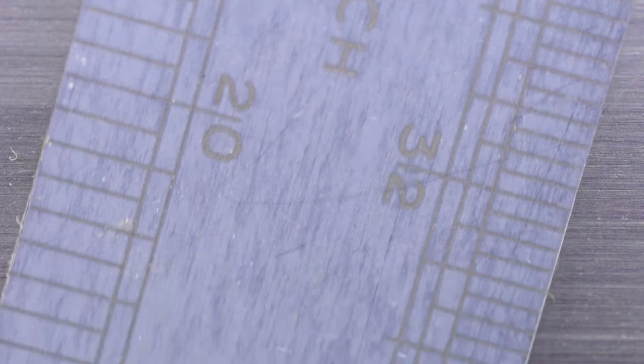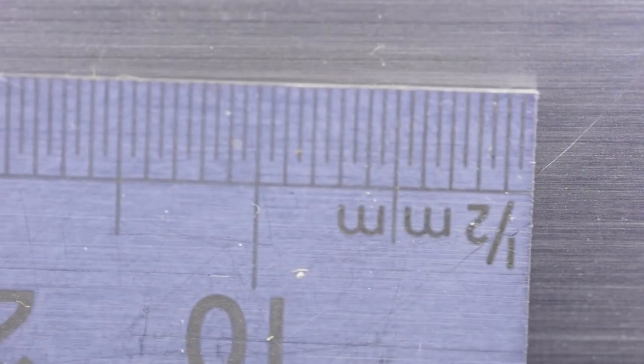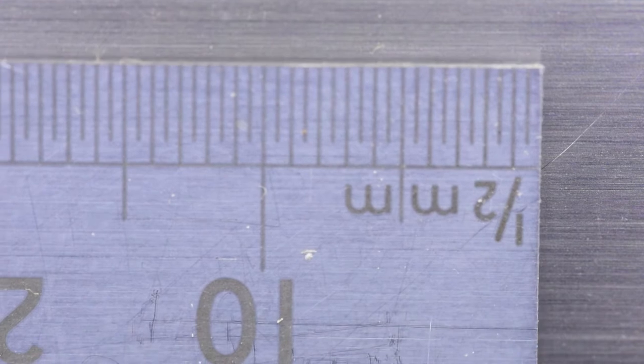There's 20ths and 32nds of an inch. And now we're turning it over to the millimeters. And you can see the half millimeter markings on that particular steel rule.